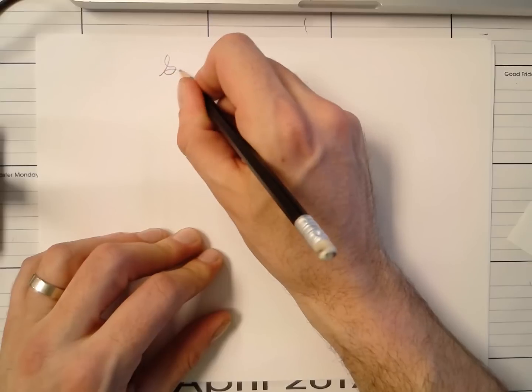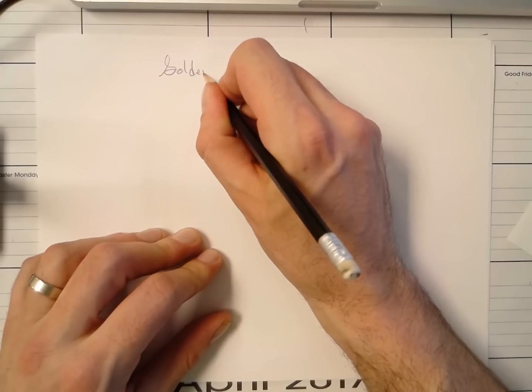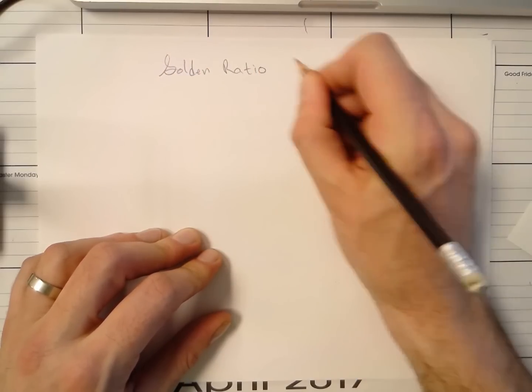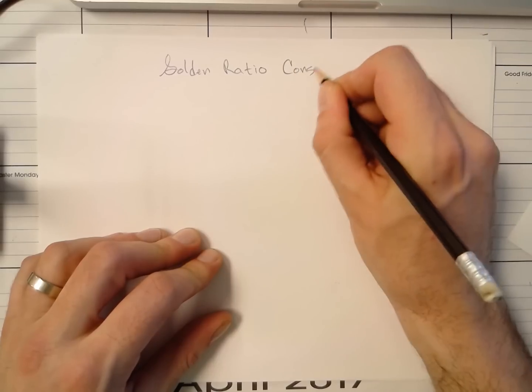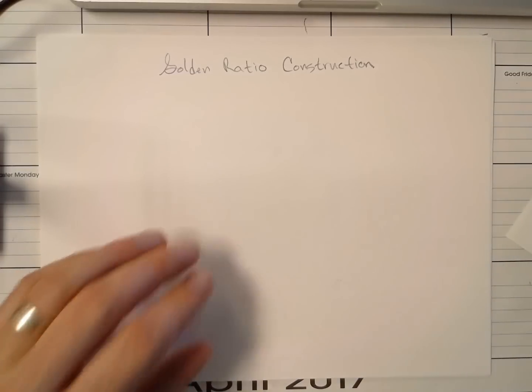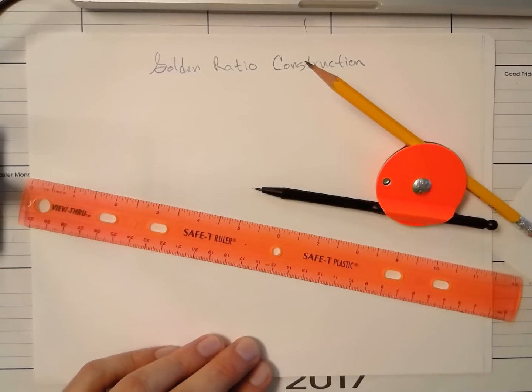Okay, we are going to take a look at the golden ratio, and we're going to construct it using only pencil, straight edge, and a compass.